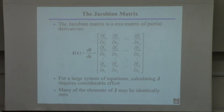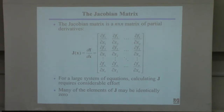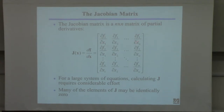This is a very important matrix in applied mathematics and numerical methods called the Jacobian matrix — also given the name J for Jacobian. It's the matrix of partial derivatives. If you look at the problem: we have equations F1, F2, F3. The first row of this matrix is the partial derivative of the first function with respect to all the variables it could depend on — partial with respect to the first unknown, second unknown, down to the nth unknown. The second row is the second function. You have a row for each function and a column for each unknown.